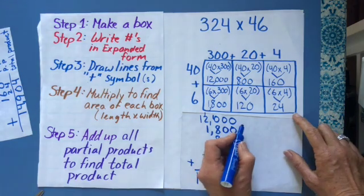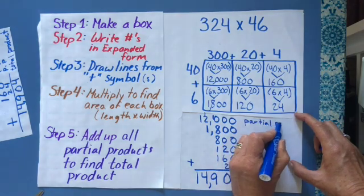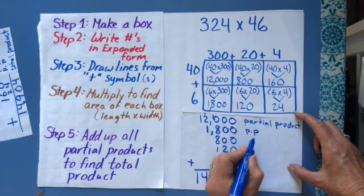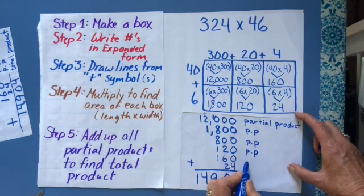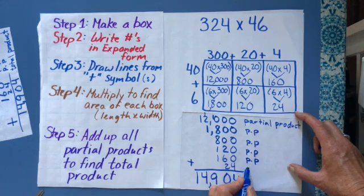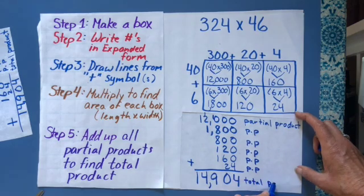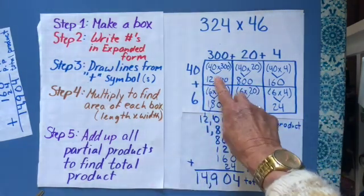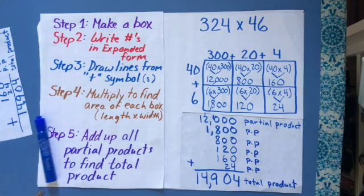So these are the partial products here. I've got one partial product, and then I'm just going to abbreviate: two, three, four, five, six partial products. And then I have my total product here. So remember, partial products are just like subtotals of multiplication. So if I have six boxes, I have six partial products. I hope that helps. Thanks. Bye.